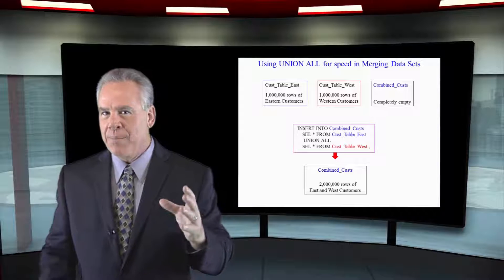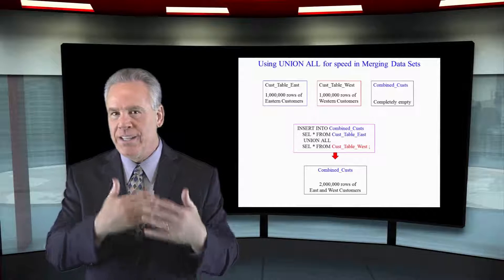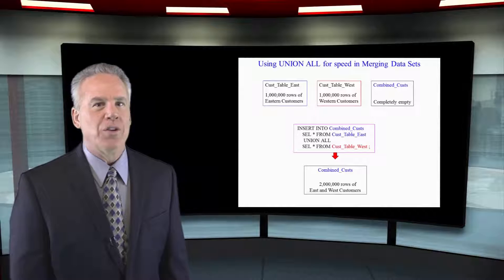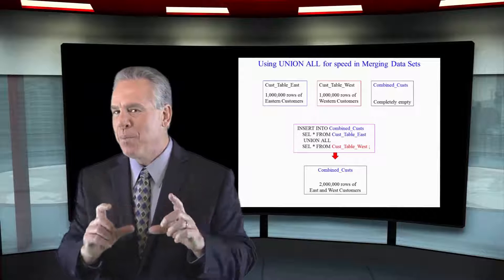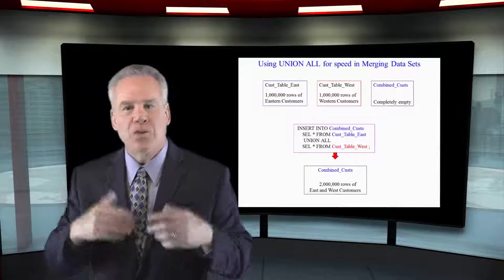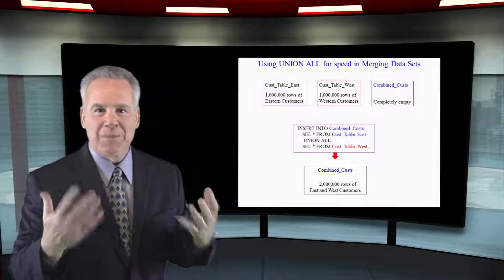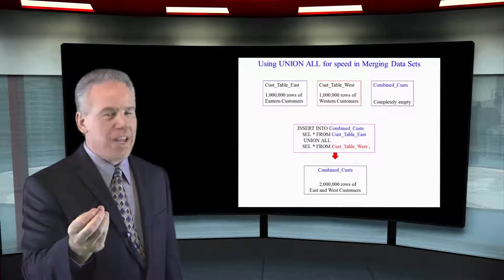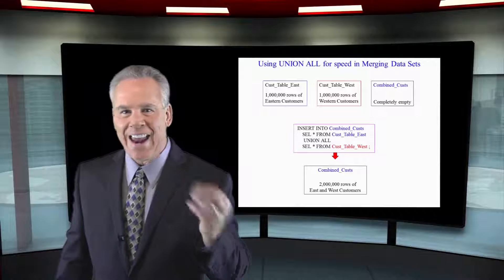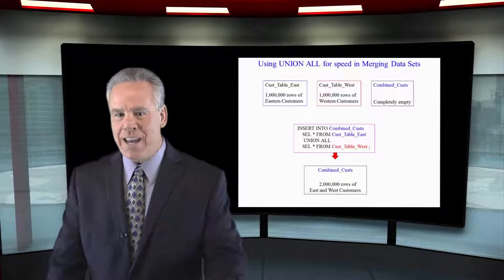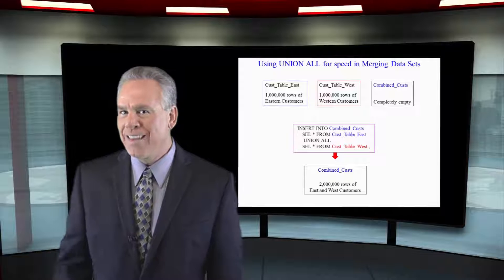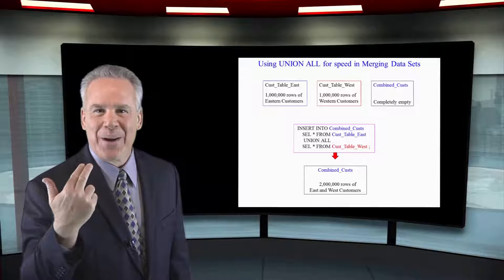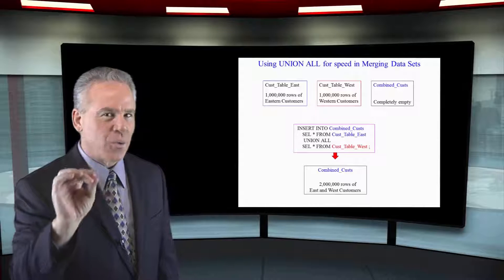Anytime a system is going to have to insert, update, or delete data that it owns, it pulls out its camera called the transient journal and takes a before picture of that row. So if there's any need to roll things back, it can roll things back to the way things were before. It's like going in and getting a haircut, having the barber take a picture before you get that haircut, and then if you don't like the haircut afterwards, they can put it back to the way it was. So that's the transient journal.